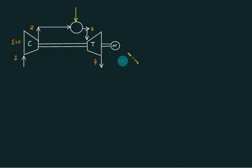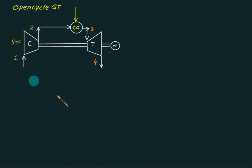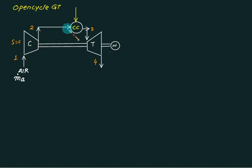This system is called an open cycle plant because the exhaust gases are not recirculated back. The components are a compressor, a combustion chamber, and a turbine — there is no pre-cooler. Fresh air is taken in at a mass flow rate of m-dot-a. From 1 to 2 is compression of pure air; from 2 to 3 is heat addition at constant pressure.